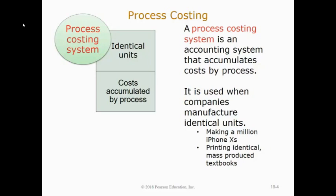A lot of America's largest companies use process costing — the Apples, Googles, Fords — all the big major players produce goods that are identical in large quantities. Job order costing is more specific to, say, a local area small business. In this chapter I'm going to focus exclusively on job order costing, but it's only used by that one specific type of company. Some companies' business models make it so they want to use process costing because it makes more sense.